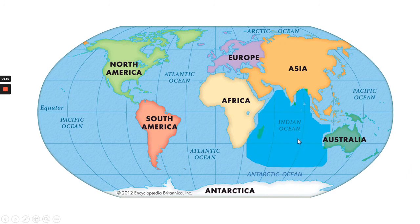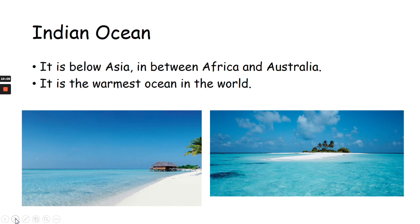And this ocean is the Indian Ocean. This country here — this part of Asia — this country is India, this little triangle shape dipping down. So, that helps me remember that the Indian Ocean is next to India. It's also on this side of the African continent and on this side of the Australia continent. The Indian Ocean is below Asia, in between Africa and Australia. It is the warmest ocean in the world. I'd love to be sitting on this beach here, having a paddle in that lovely water, looking out for little fish and creatures that live there.